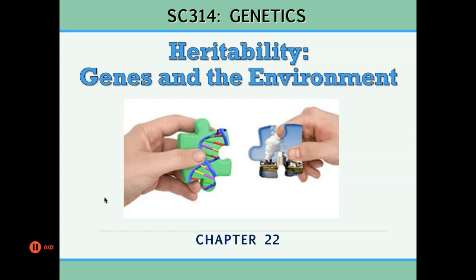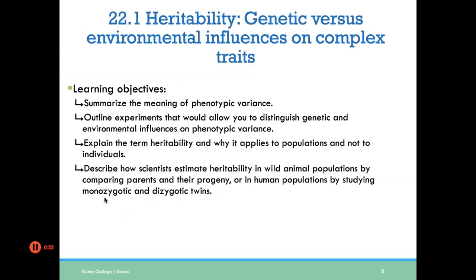Hi everyone, welcome back to another recorded lecture of genetics. Today we'll be discussing Chapter 22, the last chapter, which discusses heritability — how different phenotypes are influenced by the genes that encode those phenotypes but also by the environment. We'll talk only about section one: what it means to be phenotypically variant, experiments to distinguish genetic from environmental influences, the term heritability, and how scientists estimate heritability in animal and human populations.